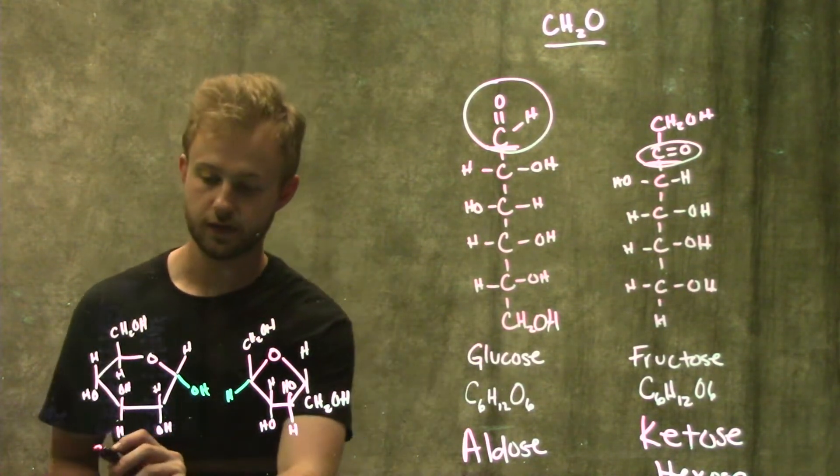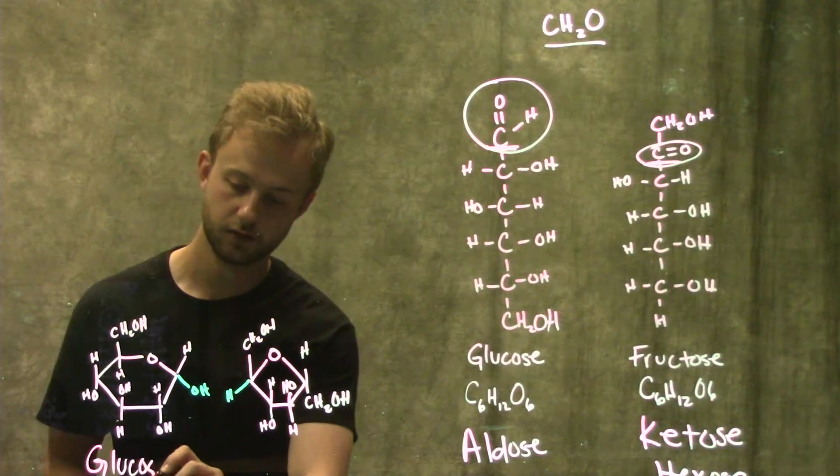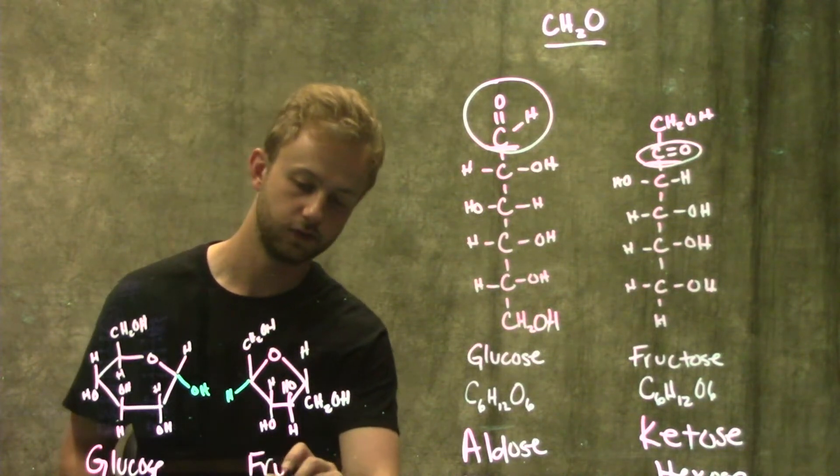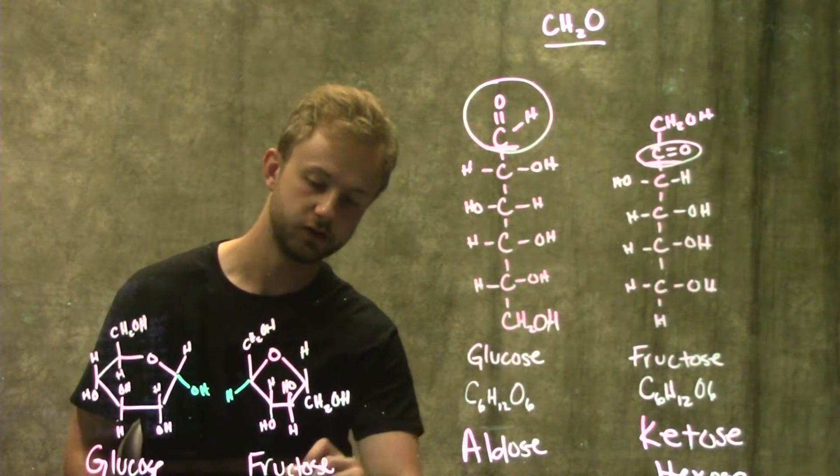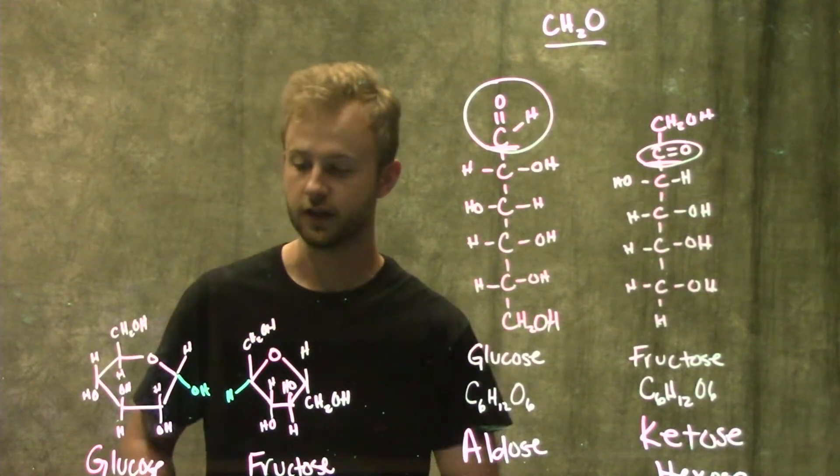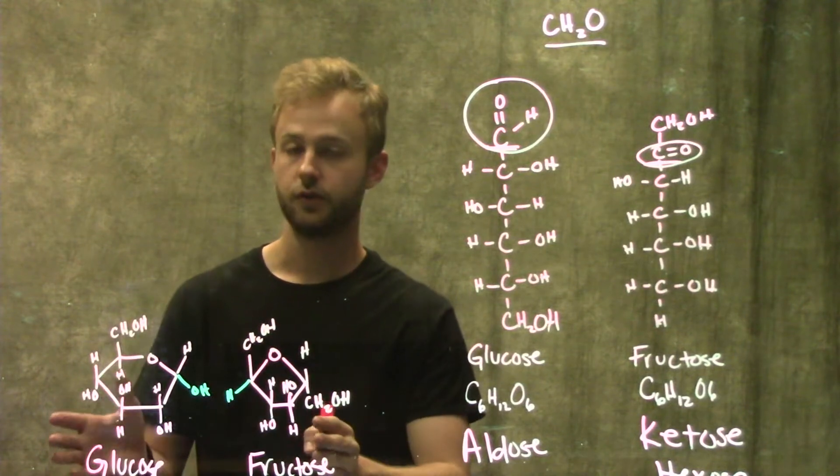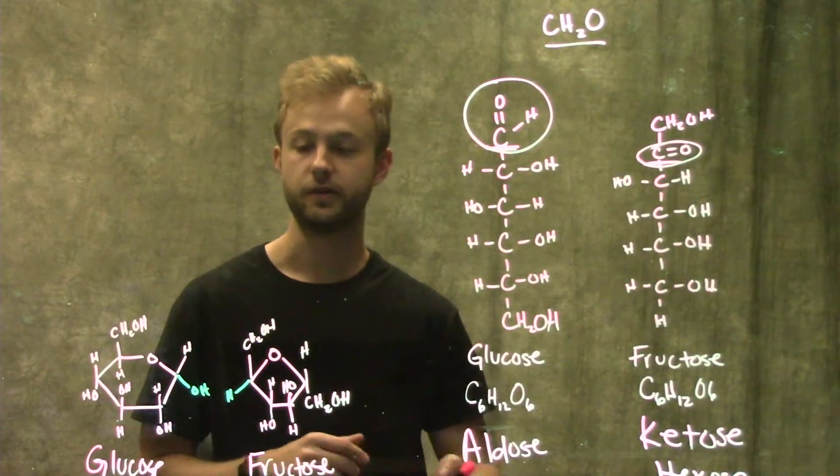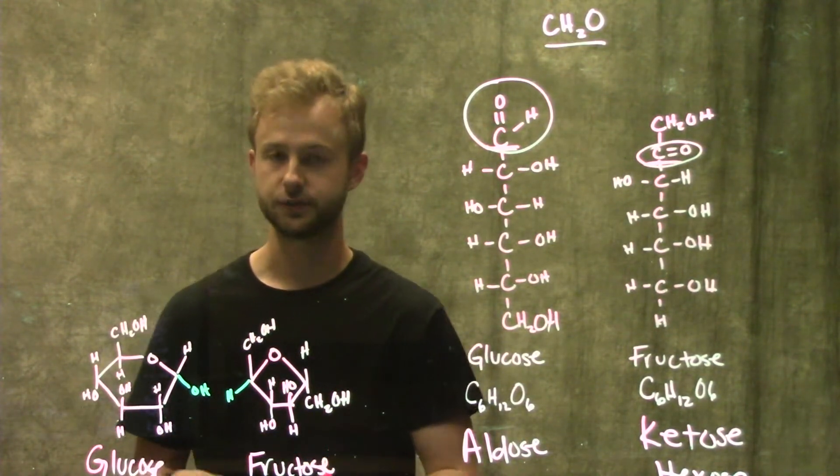This one right here is going to be glucose, and this one is fructose. Don't worry about trying to memorize the structure of these rings right now, you'll get into that in higher level courses. But do know that carbohydrates are typically found in rings in our cells.